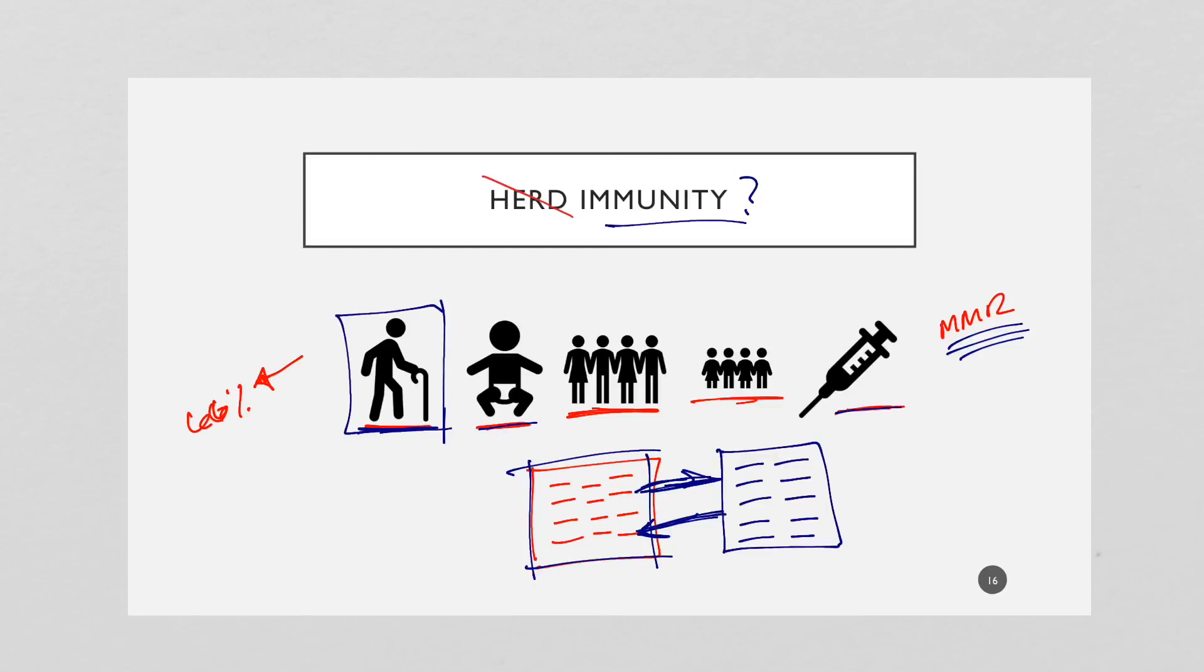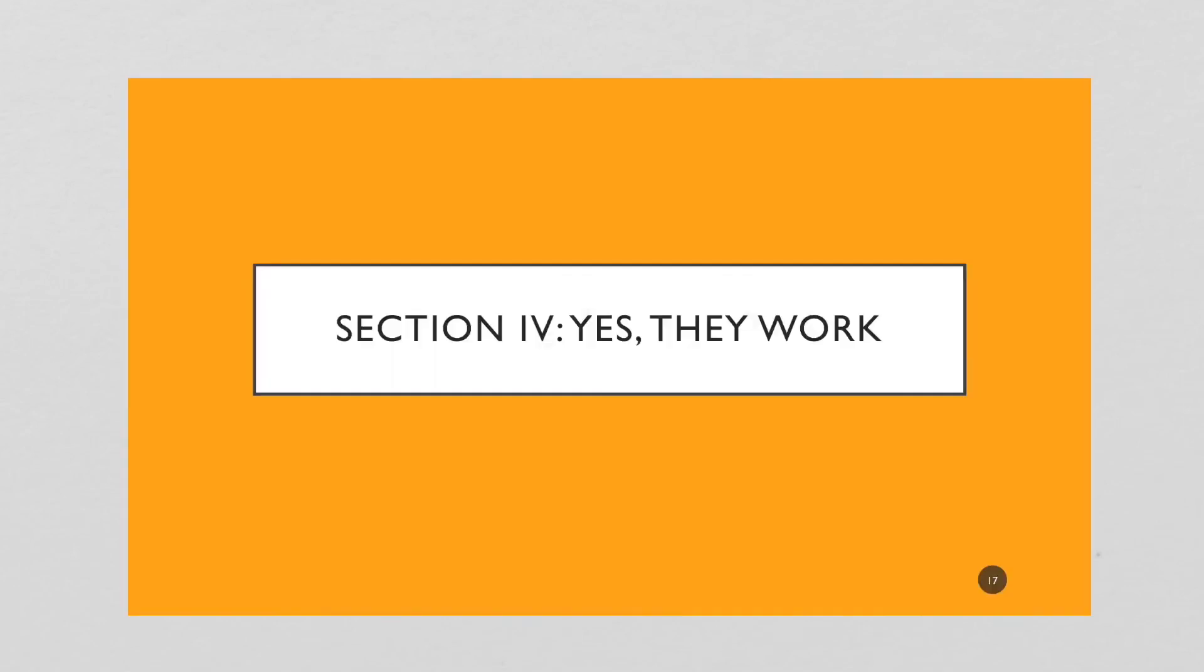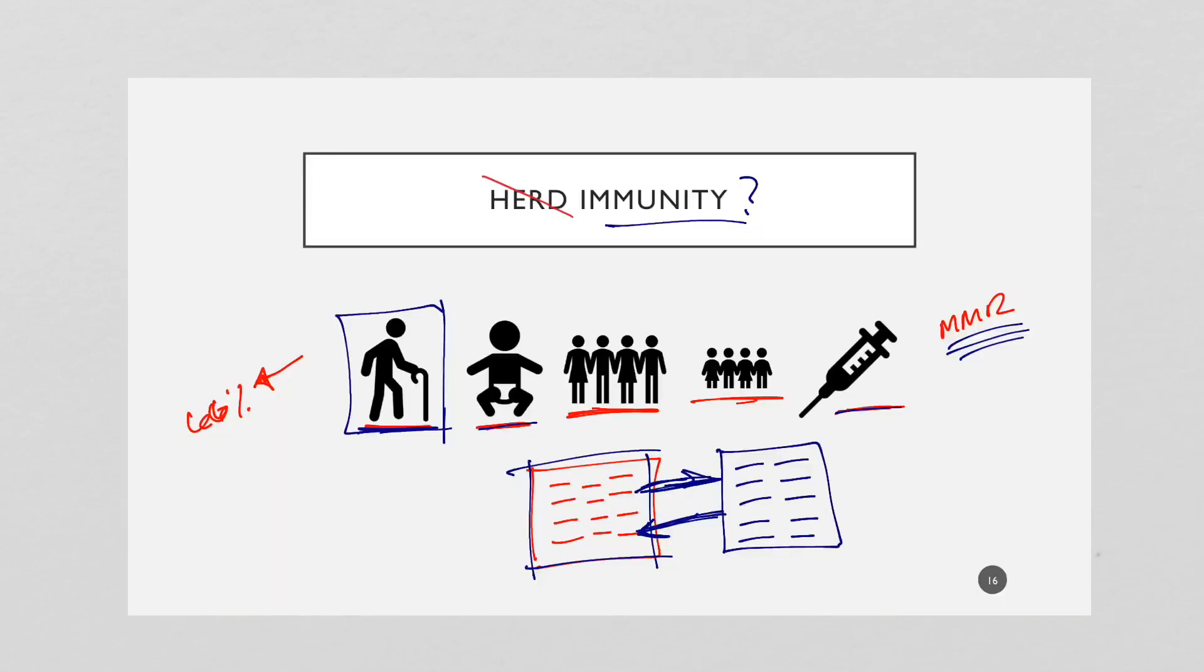That concludes population community immunity. I keep wanting to call it herd immunity because that's what we call it for a very long time. Next time we're going to talk about vaccines and what evidence do we have that they work. Section four - yes, indeed, they work. But again, sections one and two are linked in the description to this video down in the bottom left hand side. You can go watch those.